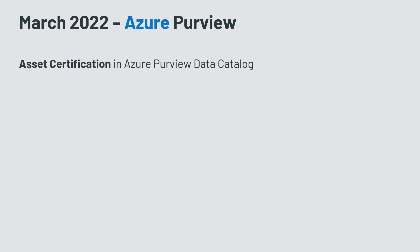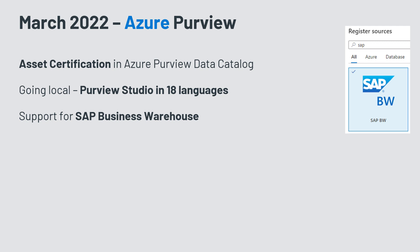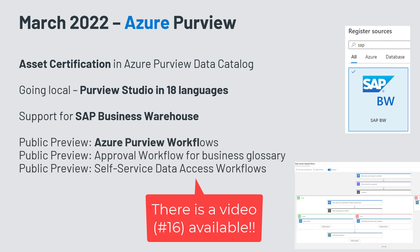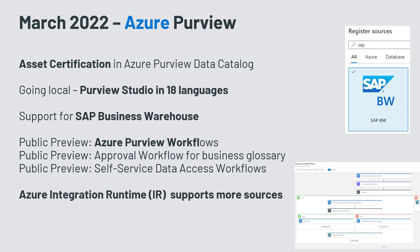In March, many things were announced. The certification of data assets in your data catalog was introduced, and Purview Studio became available in multiple languages — 18 languages are now supported. Support for SAP Business Warehouse was added to scan the metadata and structure. The Azure Purview workflows were introduced into public preview for approval workflows of business glossaries and self-service data access workflows. Additionally, the Azure Integration Runtime gained support for more sources, such as Snowflake.